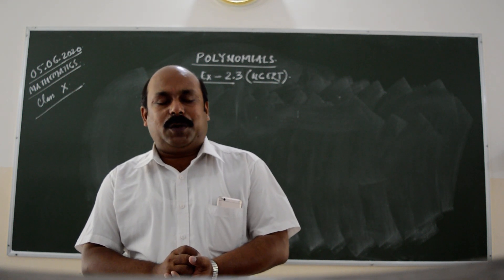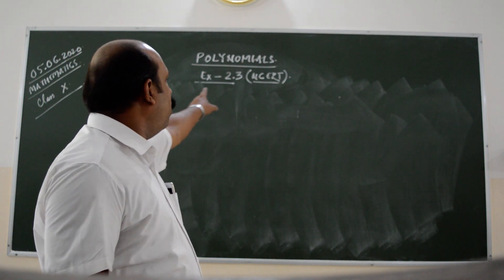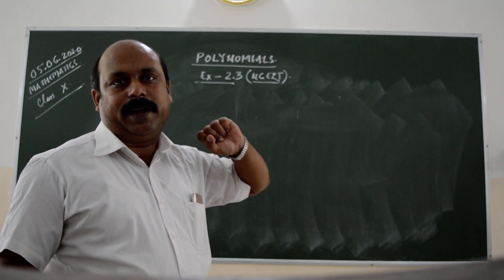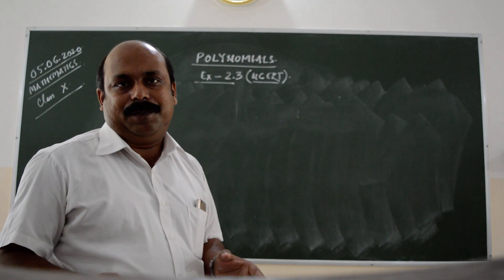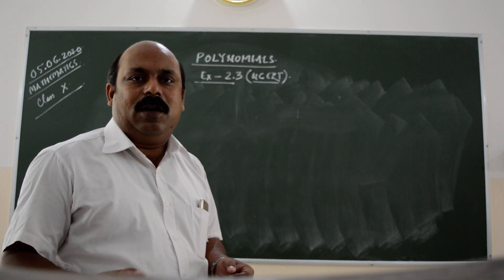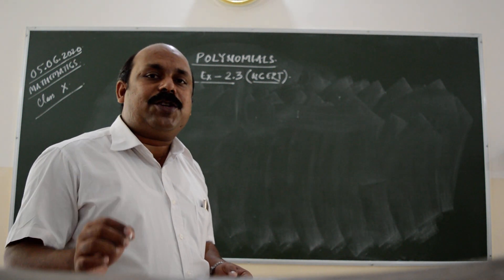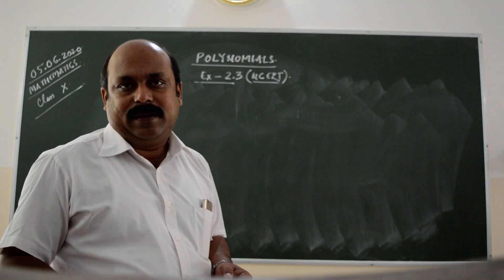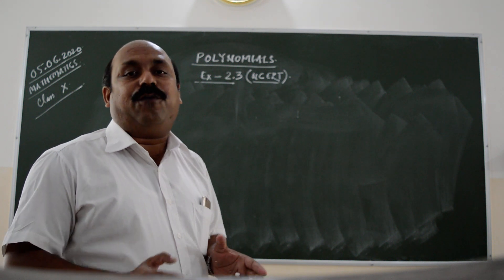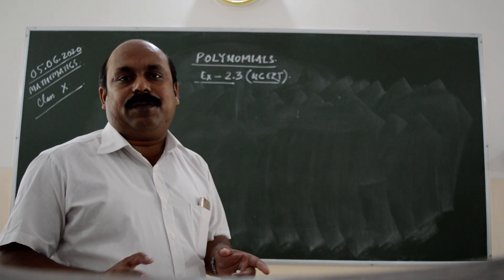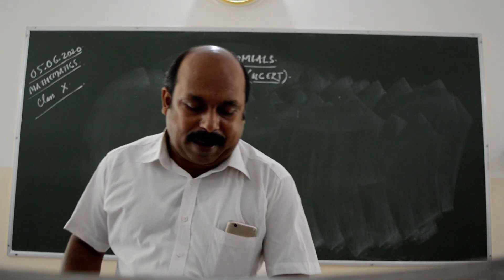Wish you all a very happy morning, students. Today we are going to take up Exercise 2.3 of NCERT. This exercise is based upon division of polynomials. If you have the concept of division of polynomials, you can solve this exercise. You have studied division of polynomials in standard 8. We have to take care of the standard form, arrangement of the given polynomial, and then dividing it. So let us take some examples.